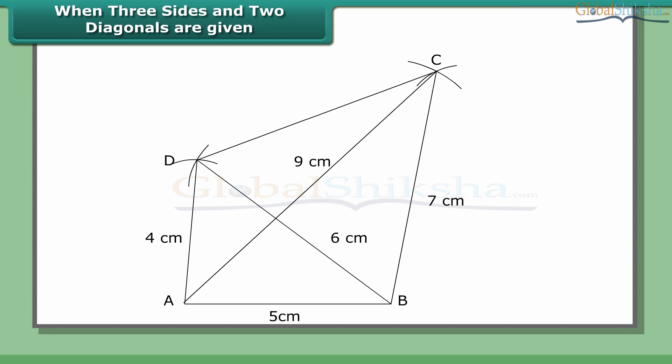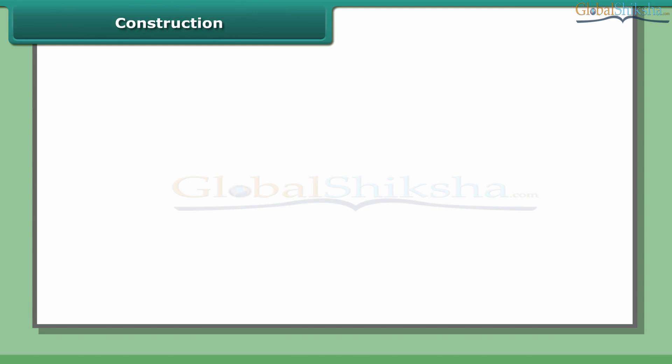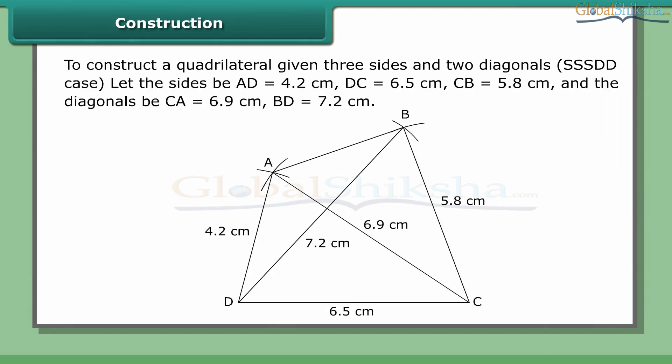To construct a quadrilateral given three sides and two diagonals — the SSSDD case. Let the sides be AD = 4.2 cm, DC = 6.5 cm, CB = 5.8 cm, and the diagonals AC = 6.9 cm and BD = 7.2 cm. The two triangles we can construct to complete the quadrilateral are BCD and ACD.